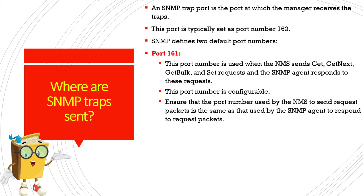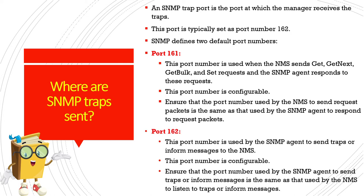Both device configurations must align — if the NMS or manager sends requests on port 161, the agent device must also be configured to consume information on port 161. Port 162 is used by the SNMP agent to send trap messages to the NMS. This port is also configurable, and the manager must be aware it will receive SNMP traps on port 162 so further processing can be enabled.